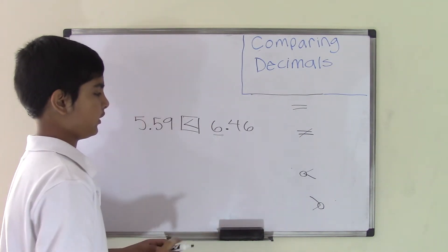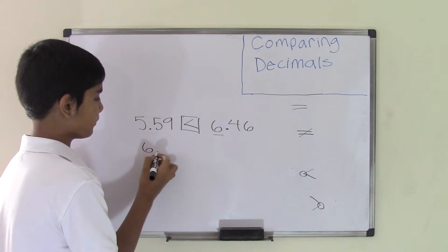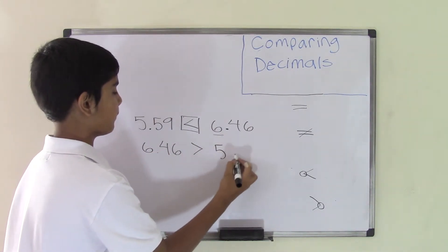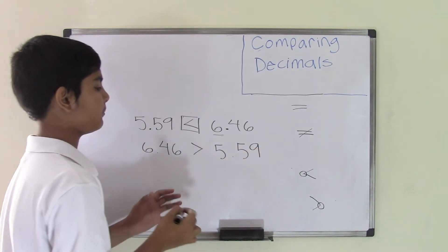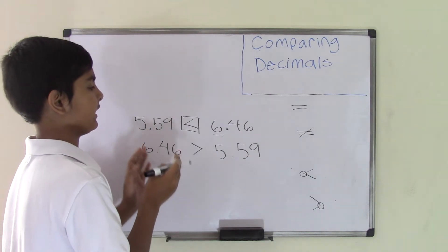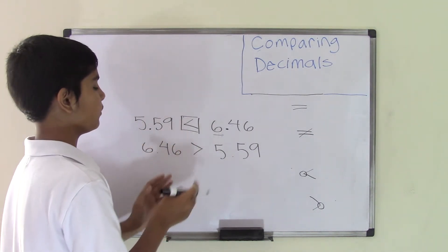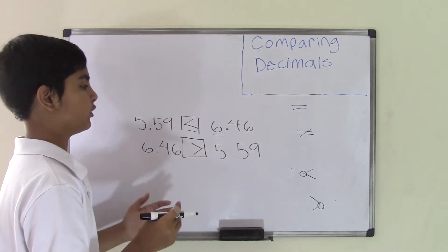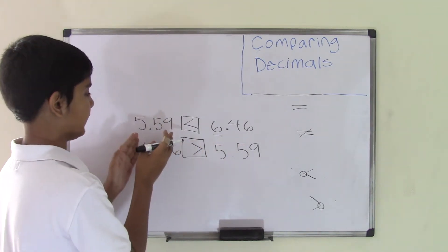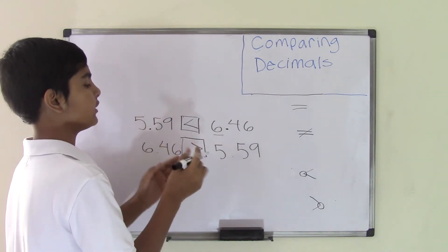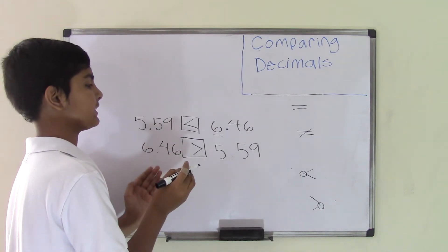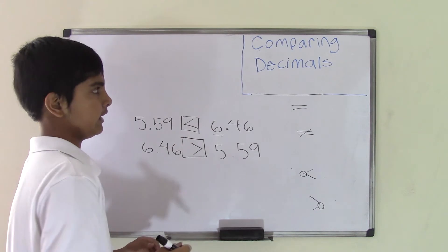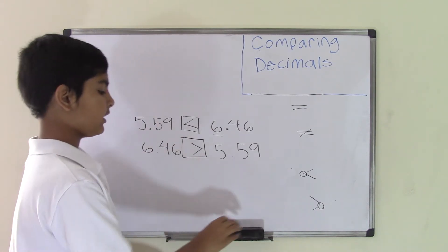We can also restate this by saying 6.46 is greater than 5.59. It doesn't really matter — you can say 5.59 is less than 6.46, or 6.46 is greater than 5.59. But you have to go with the order: if 5.59 is first and 6.46 is second, you say 5.59 is less than 6.46. This is how you compare two decimal numbers. Let's look at more examples.